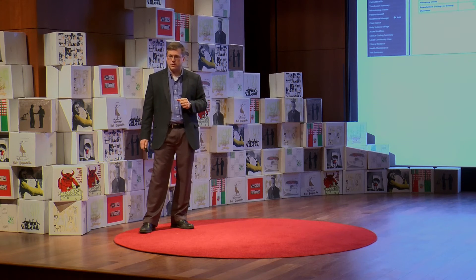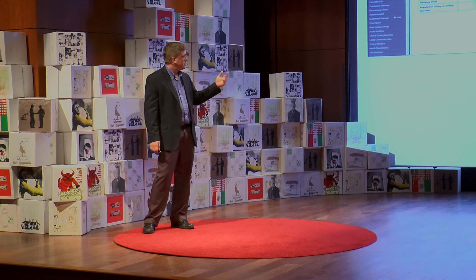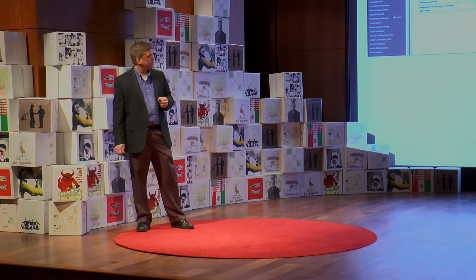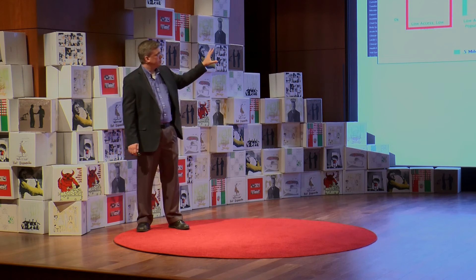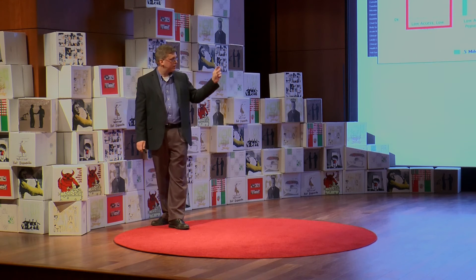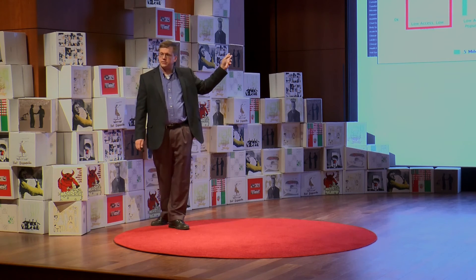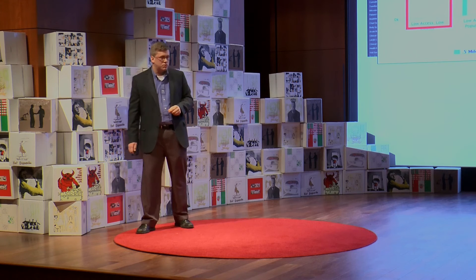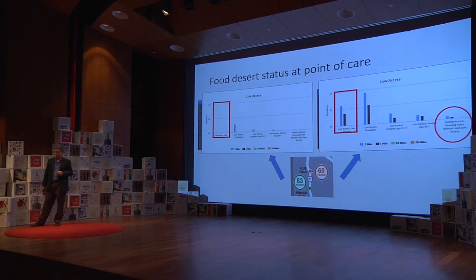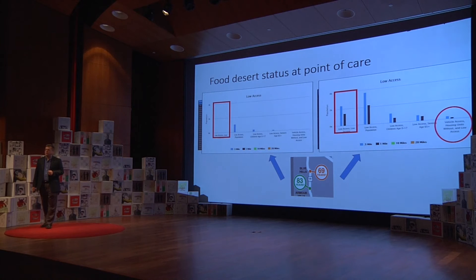Let's take the food desert example as another simulation. For those same two sample patients, when we look at the food desert context, it's very striking — the difference between those two areas. There are basically no food access issues in the region where people tend to live 83 years. In the other region, more than 2,000 people in that census tract are considered to have low access to adequate fresh food supplies.